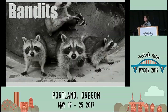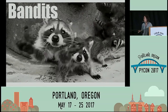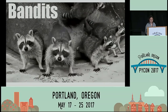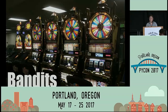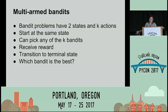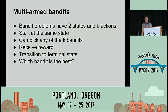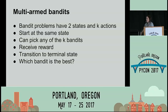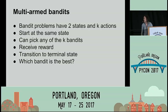We're going to go over the simplest type of reinforcement learning problem, which is bandit problems. I don't mean raccoons — I actually mean slot machines. So a multi-armed bandit. Bandit problems have two states and k actions. We're going to start at the same state, pick one of these bandits — which is like a slot machine — and the slot machine will give us a reward. This reward can be deterministic or it can be random. Then we just go to the end state. We want to figure out which slot machine is the best one to pick.